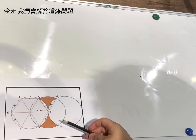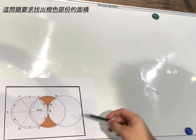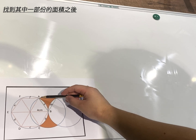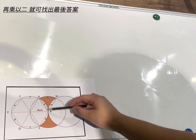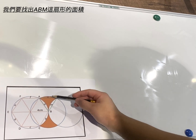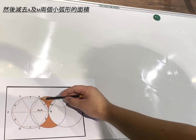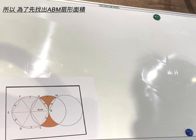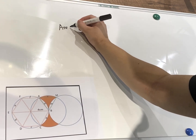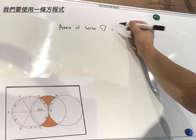Today we're going to find the answer to this question, which asks us to find the area of the shaded region in this diagram. To find the shaded area, we can break it down into two parts — find the shaded area for one side and then multiply by two. To find one part of the orange shaded area, all we have to do is find a large sector area and then minus the two tiny sectors.